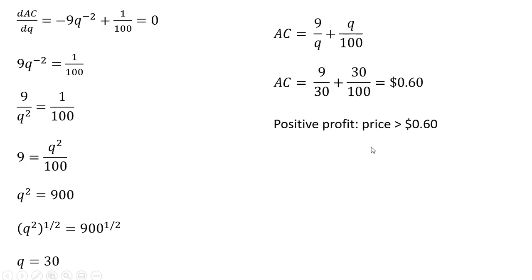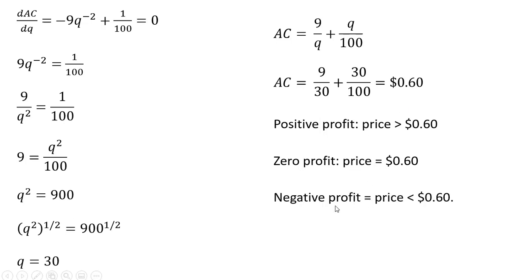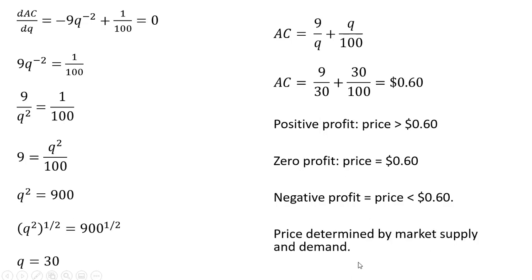Positive profit will occur any time price exceeds the minimum point of the average cost curve. Zero economic profit occurs where the price equals 60 cents — the minimum point on the average cost curve. The firm will be making negative profit if the price is below that minimum point. Remember, the price in this perfectly competitive market is determined by market supply and market demand.